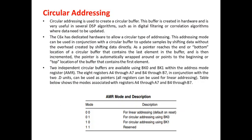Circular addressing is used to create a circular buffer. As we have seen in the beginning of our DSP processes, in order to address circular buffering, we need to use circular addressing. This buffer is created in hardware and is very useful in DSP algorithms such as digital filtering or correlation algorithms. The C6X has dedicated hardware to allow a circular type of addressing.